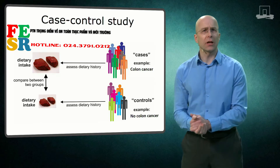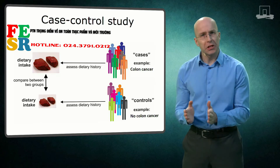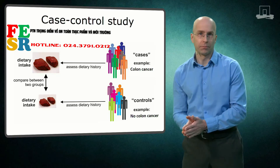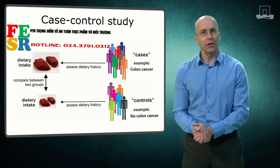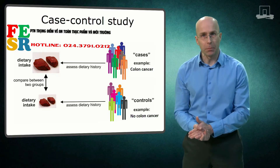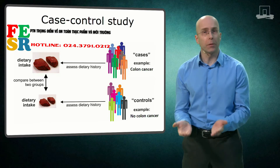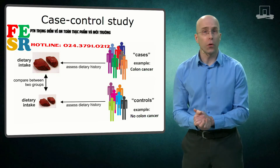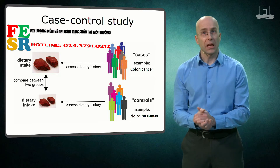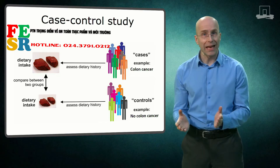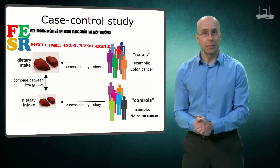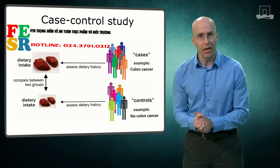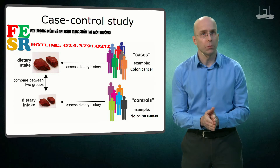Let's look at an example. Imagine that we are interested in the link between diet and colon cancer. A group of colon cancer patients is assembled together with a control group of non-patients of about equal size — let's say about 300 to 400 people. Information about the participants' dietary habits is collected using a food frequency questionnaire and compared between the two groups.